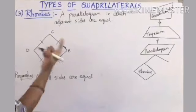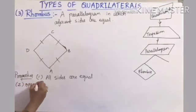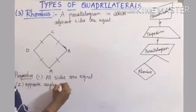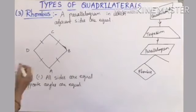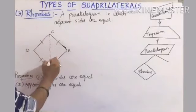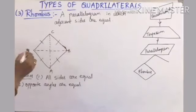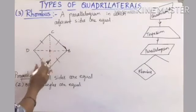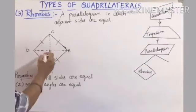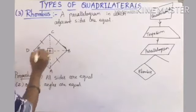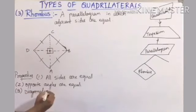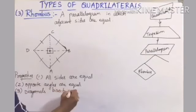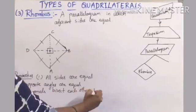Properties of a rhombus: all sides are equal; opposite angles are equal; and the diagonals bisect each other perpendicularly, meaning the diagonals intersect at 90 degrees.